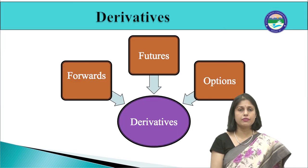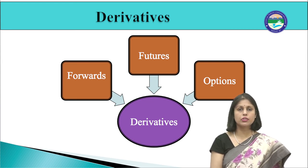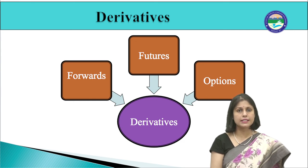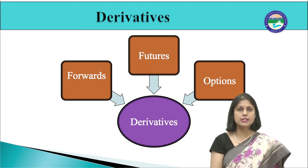Derivatives are another category of financial instruments. The financial market is highly volatile and prices of securities fluctuate constantly; through the use of derivative instruments, investors generally minimize their risk — derivatives are used for hedging purposes. A derivative is a financial instrument whose value is derived from the value of one or more underlying assets, which can be commodities, interest rates, precious metals, currency, bonds, stocks, indices, etc. The most commonly used derivative products are forwards, futures, and options.